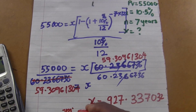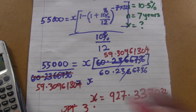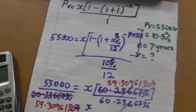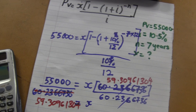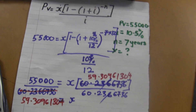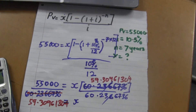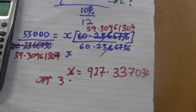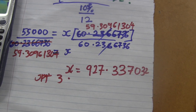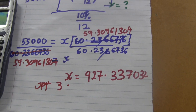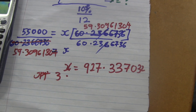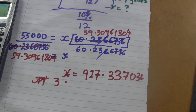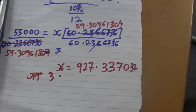So our X, the monthly payment, equals approximately $927. That matches option 3 for question number 11. The answer is option 3. Thank you so much — please subscribe to my channel, and if you have any questions or requests, leave a comment. I'll definitely respond to your comments.